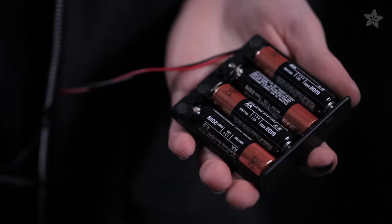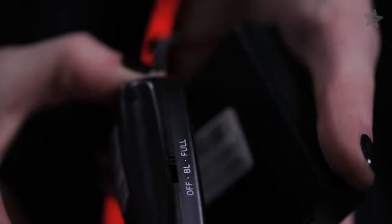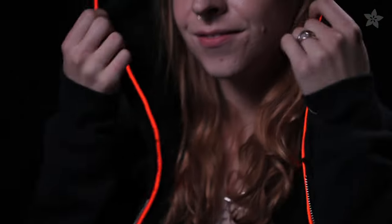All EL materials need to be powered by an inverter. An inverter translates the DC voltage coming from the batteries into high voltage alternating current, or AC, required to excite the phosphor. Although it's high voltage, EL uses very little current, so it's safe to wear.